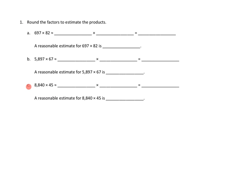Problem number one. The directions are as follows: Round the factors to estimate the products. I'm going to do the most difficult of those three, which is 1c. And we're given the specific question of 8,840 times 45. What is that roughly? Well, 8,840 is very close to 9,000.